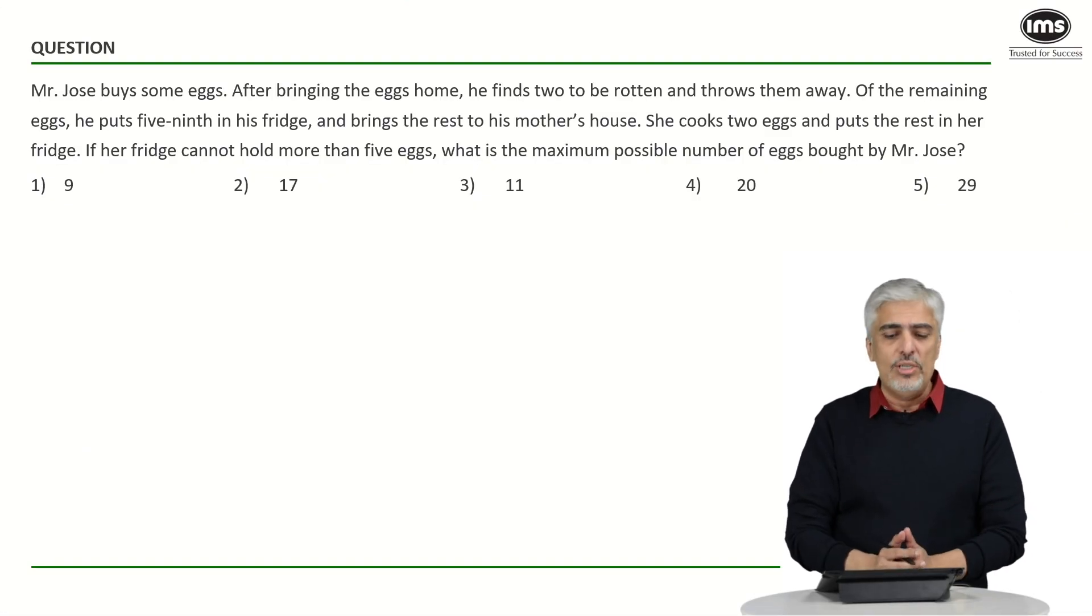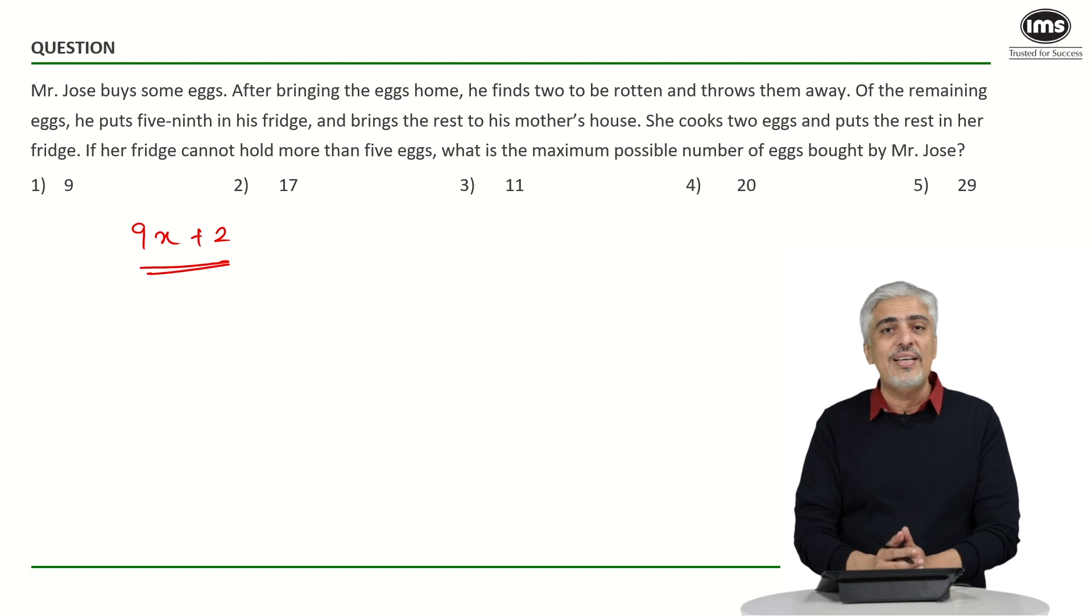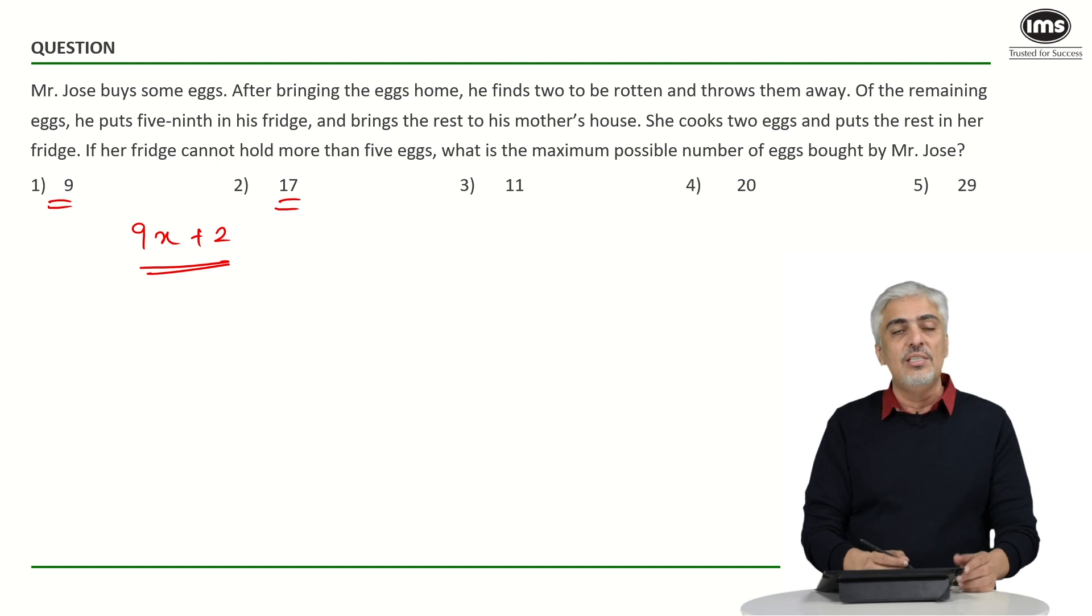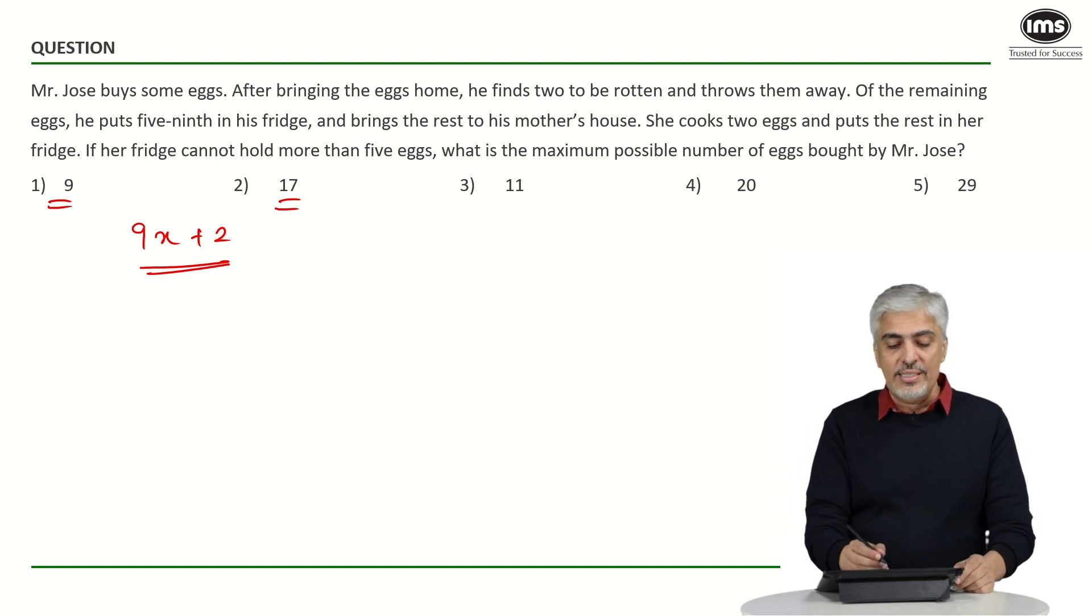Let's have a look at the next approach for the same question. Now we should realize for the second approach that the total number of eggs had to be in the form of 9x plus 2. Once I know the total number of eggs have to be in the form of 9x plus 2, 9 and 17 are out of the question because 9 is not in the form of 9x plus 2 neither is 17. Now the three options left are 11, 20 and 29. Now what I would do because there was a restriction of not holding more than 5 eggs, I would start always with the middle most option. Let's say 20.